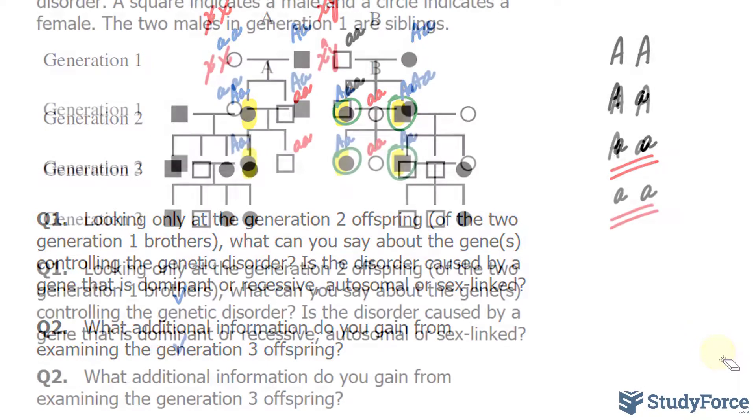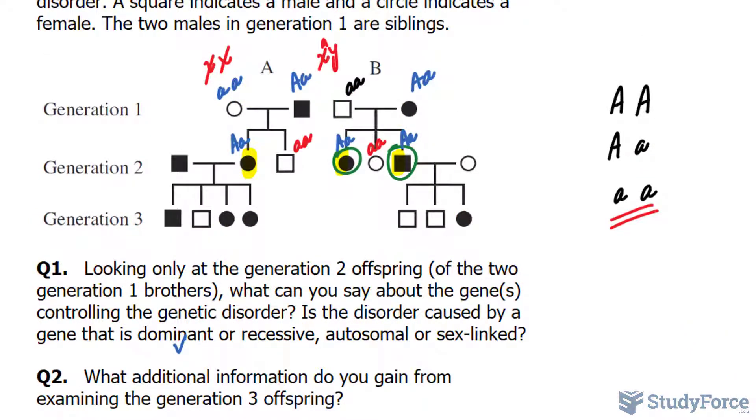So far what's unsettled is whether it is sex-linked or autosomal. In question number 2, what additional information do you gain from examining generation 3 offspring? By examining generation 3, we can gain more insight if it is autosomal or sex-linked. We can also tell definitively if it is a dominant or recessive allele causing the problem. Assuming that it is autosomal for now...